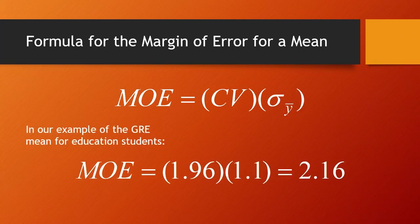In our example, the critical value is 1.96 because we want a 95% confidence interval, so we obtain this from the standard normal distribution. The standard deviation of the means is 1.1. If we multiply these, that gives us a margin of error of 2.16 or about 2.2.